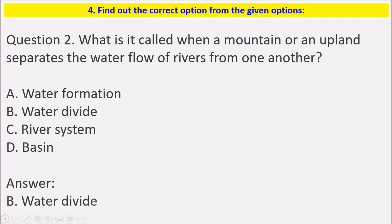Next question: What is it called when a mountain or an upland separates the water flow of rivers from one another? It is known as a water divide.